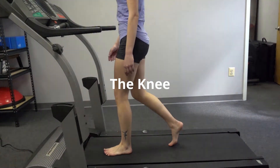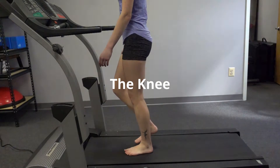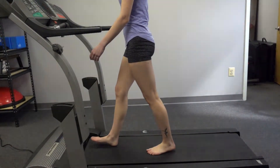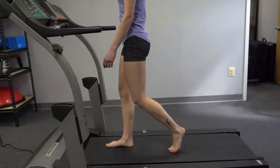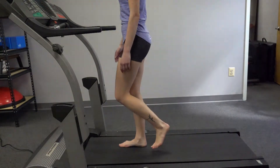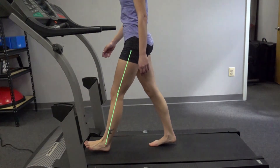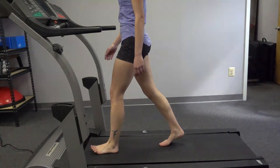Our sagittal plane motion at the knee includes flexion and extension. Similar to our ankle, our knee goes through two periods each where we're near full extension and where we're flexed. As shown by our graph, our areas of flexion occur during loading response and during mid-swing. As our leg prepares to make contact with the ground, our knee nears a period of full extension. As we absorb shock from the ground, the knee flexes slightly to help during loading response.